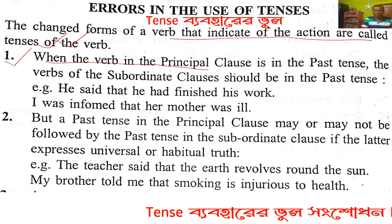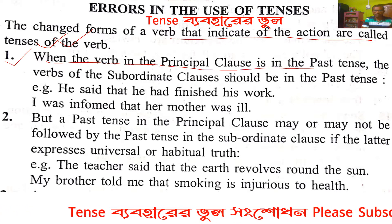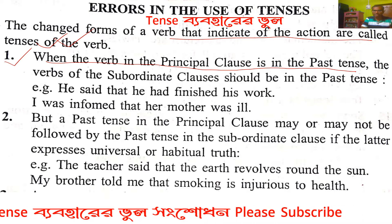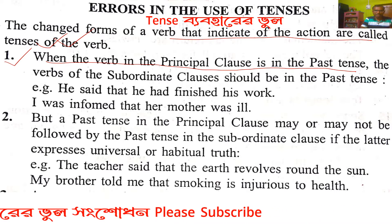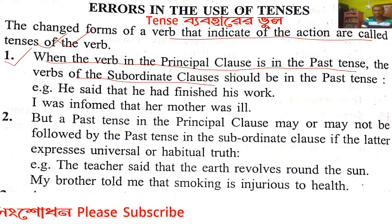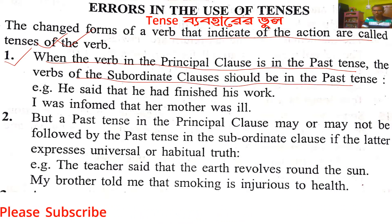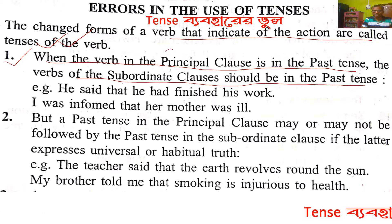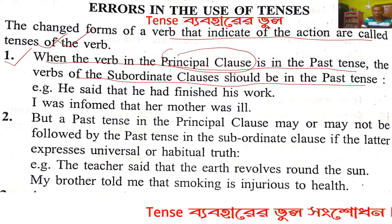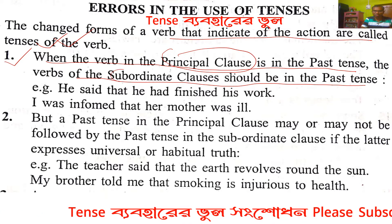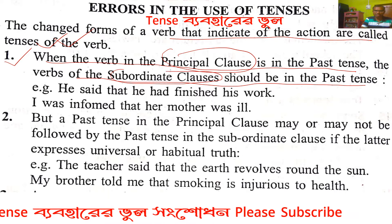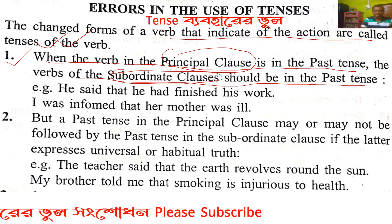Rule 1: The verb in the principal clause is in the past tense, the verb in the subordinate clause should also be in the past tense. Jodi kono sentence-e principal clause past tense-e hoi, tabe subordinate clause-o past tense-e hoi.